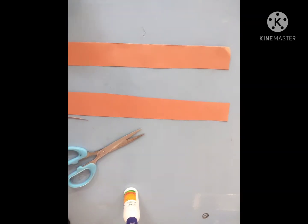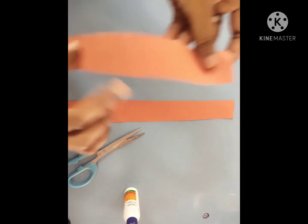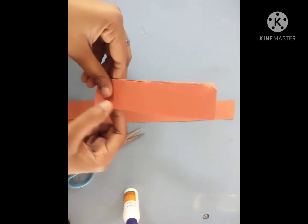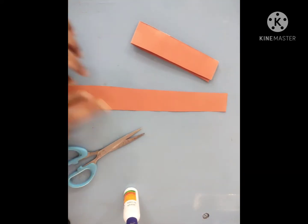Here we have taken two strips of paper. Now all we have to do is fold these strips into two equal parts like this. So I am folding it like this, and the other one too.